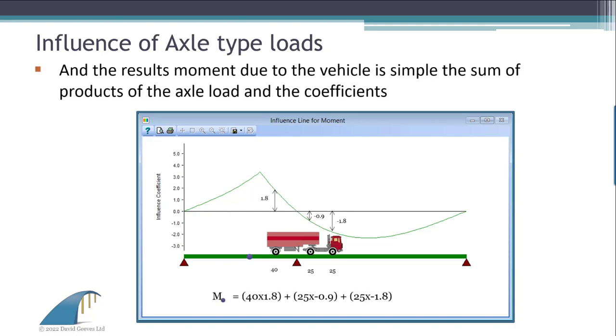Then, a simple expression can be used to determine the design effect value, M, at the purple dot, due to the complete truckload. By incrementally moving the truck along the deck and carrying out the same calculation, we can easily determine the position and value of the most adverse design effect.